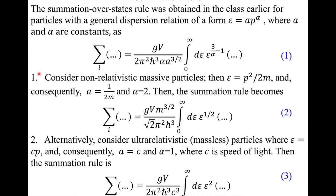Let's consider the first case: non-relativistic massive particles. In this case, ε = p²/2m, which means a equals 1/2m, this coefficient, and alpha is 2. If we substitute that in the summation rule, the mass of the particle comes to the power of 3/2, and the total power of epsilon is 3/2.